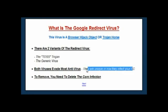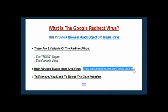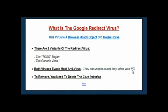Unfortunately it's extremely difficult to remove because both variations are immune to antivirus programs. Antivirus programs basically look for a rogue file or application on your PC when they scan. Unfortunately, the redirect virus doesn't put a program or file that most antivirus programs will identify. This means you can't use AVG, Norton, Trend Micro, or any of the top antivirus programs to deal with this virus.